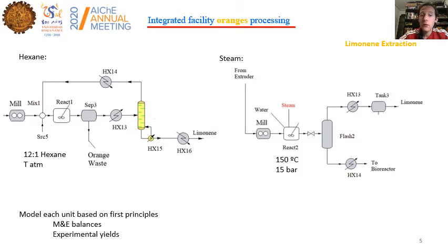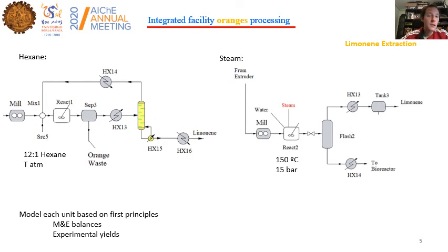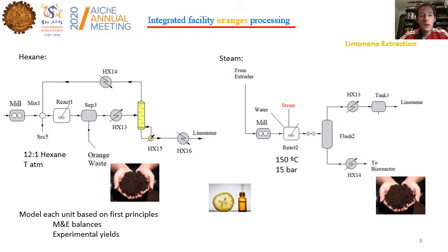We can consider two different alternatives: the use of hexane and the use of steam. The use of hexane consists of putting the peels in contact with hexane in a ratio of 12 to 1 so that the limonene is extracted. A separation step results in the recovery of hexane for reuse while we obtain the orange waste.